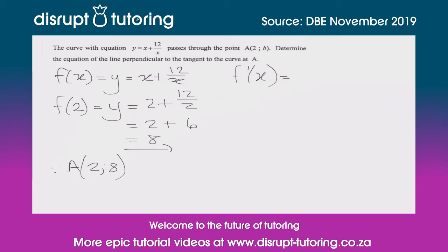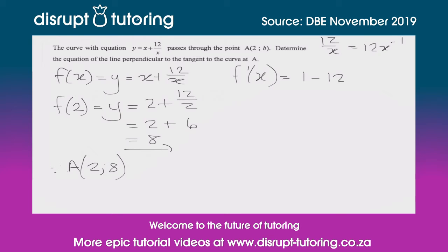Let's find the derivative of y with respect to x. The derivative of x is just 1. Then I'll rewrite 12/x as 12 times x to the minus 1. Applying the exponent rule, minus 1 times 12 gives us minus 12, and we subtract 1 from the exponent to get x to the minus 2. Rewriting with a positive exponent, f'(x) = 1 minus 12 over x squared.